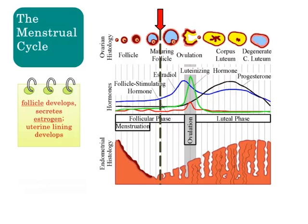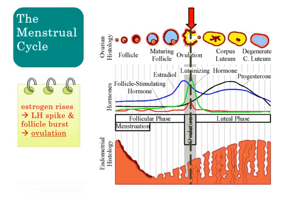At first, the increase in estrogen causes a suppression of LH, or luteinizing hormone. But when estradiol reaches a threshold level mid-cycle, it causes an LH surge resulting in ovulation. During ovulation, the follicle ruptures and releases its ovum into the fallopian tube. Ovulation usually occurs only once per cycle, and fertilization can only occur after the ovum is released and before it dies within 12 to 24 hours.